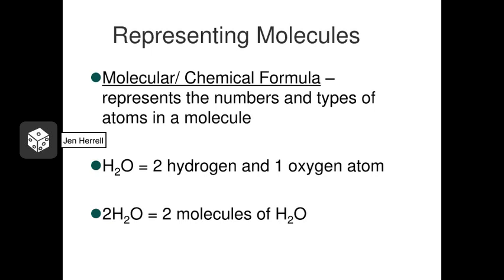There are several different ways to represent molecules, and the most common is a molecular or chemical formula. In a molecular or chemical formula, we use atomic symbols in combination with numbers, subscripts, and coefficients to represent the types of atoms involved and the numbers of those atoms. In H2O, the subscript 2 tells you that you have two hydrogen atoms and only one oxygen atom in that molecule.